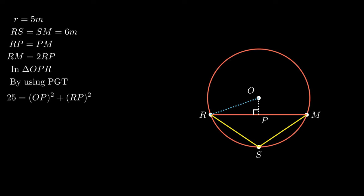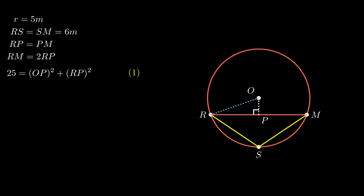Since the radius equals 5 meters, this equation becomes: 25 = OP² + RP² (Equation 1). However, this equation cannot be simplified further as segment OP and segment RP are different variables.